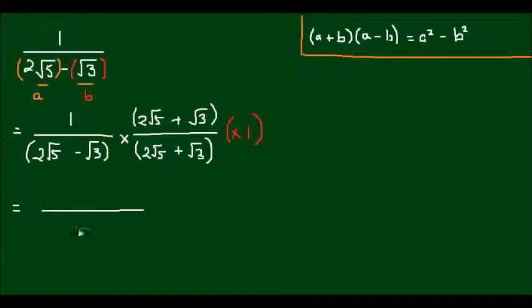If I carry out this calculation, I will get 2 times the square root of 5 all squared minus √3 squared.